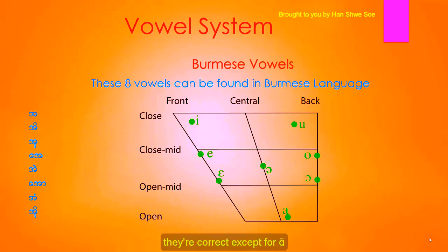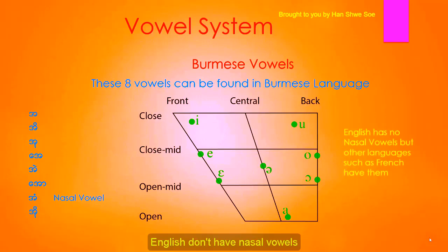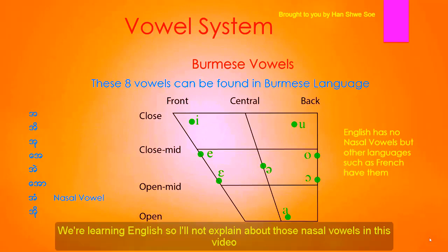They're correct, except for A, because this is a nasal vowel. English doesn't have nasal vowels, but other languages like French have them. Since we're learning English, I will not explain about nasal vowels in this video.